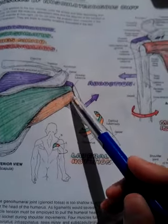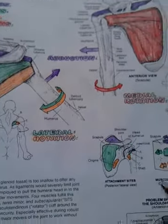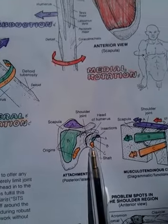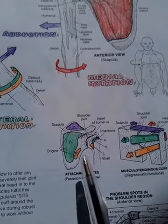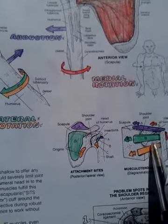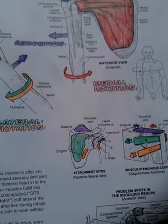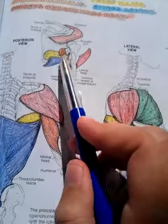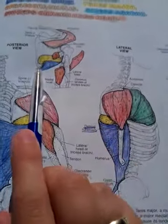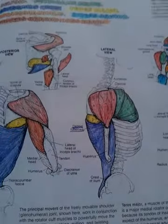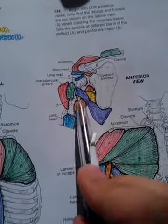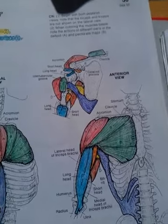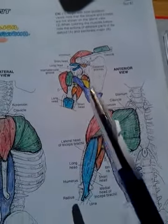Then we have teres minor, which originates on the lateral border of the scapula and inserts on the greater tubercle. Its function is the same as the infraspinatus: adduction and supination of the arm. Next we have teres major, which originates on the inferior angle of the scapula and inserts on the medial lip of the intertubercular sulcus. It is involved in adduction and pronation of the arm.